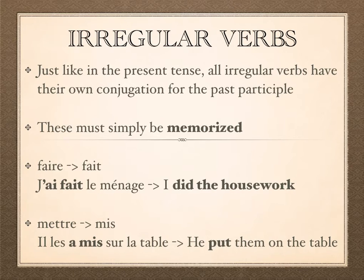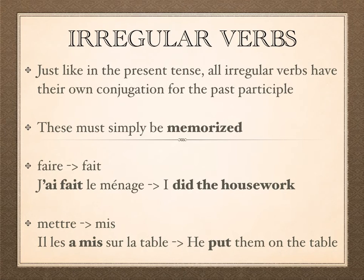And vice versa — just because a verb is regular in the past participle does not mean that it is regular in the present tense. Irregular verbs, just like in the present, simply have to be memorized. There's no pattern to them. That's what makes them irregular.